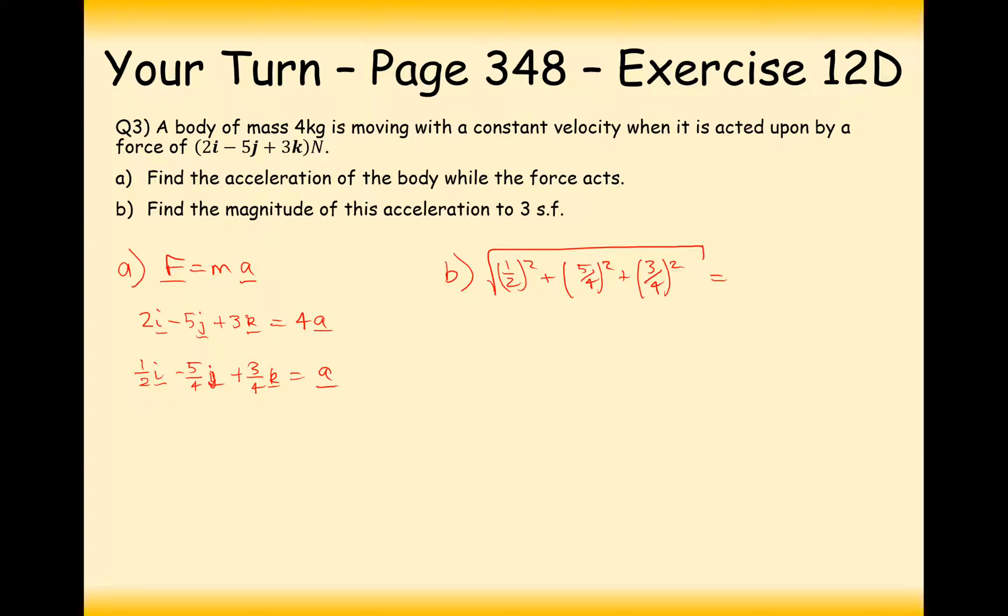What you could do is you could work out the magnitude of 2I minus 5J plus 3K and divide it by 4. You should get exactly the same answer there. And I think that's what I'm going to do. I'm going to do 2 squared plus 5 squared plus 3 squared, and all of that divided by 4, and we get 38 over 4, root 38 over 4.